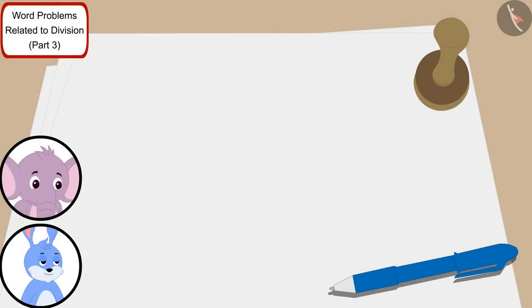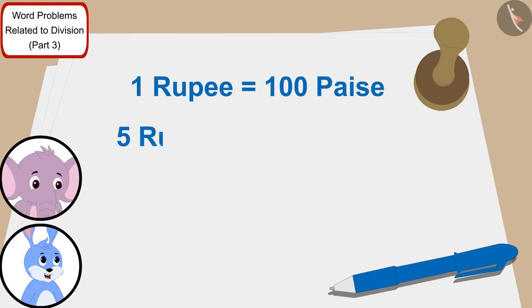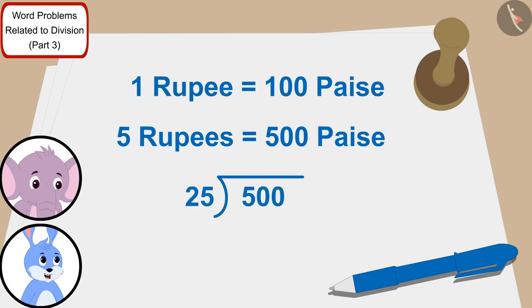We will have five rupees left and one rupee is equal to 100 paise, so five rupees is equal to 500 paise. Now it is very easy, we only have to divide 500 by 25, Bunny said to Appu.